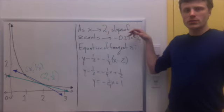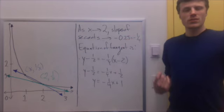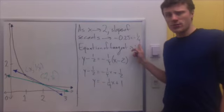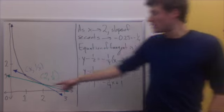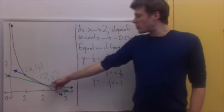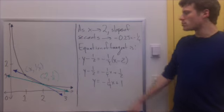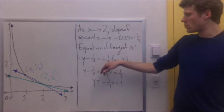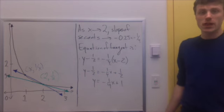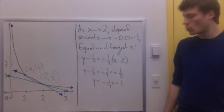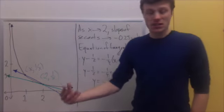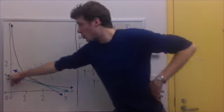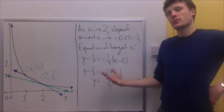As x approaches 2, the slopes of the secant look like they go to negative 0.25, which is negative 1/4. Is this reasonable? Well, it's a negative slope — that makes sense because our green line is decreasing. And since the slope has absolute value less than 1 (its absolute value is 1/4), that suggests it's not a very steep line, which corresponds to our picture too. Using the point (2, 1/2) and slope negative 1/4, we plug into the point-slope form: y minus 1/2 equals negative 1/4 times (x minus 2). Distributing gives y minus 1/2 equals negative 1/4 x plus 1/2. Adding 1/2 to both sides gives y equals negative 1/4 x plus 1. Extending the tangent line, it looks like it hits the y-axis at 1, so it has the right y-intercept. So this seems reasonable.